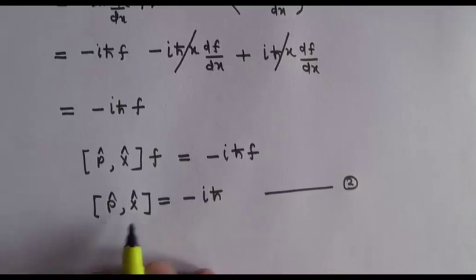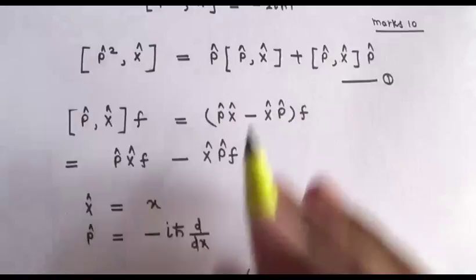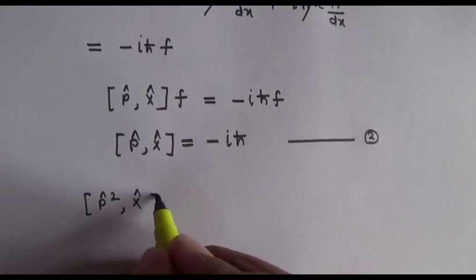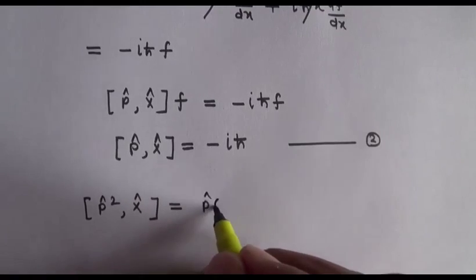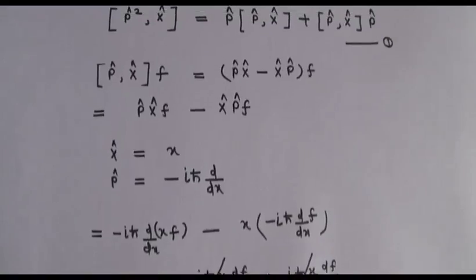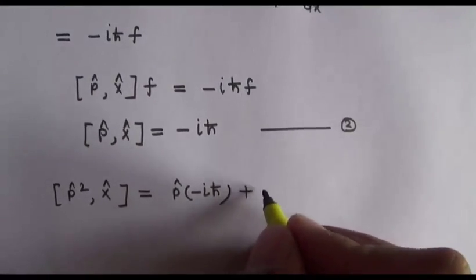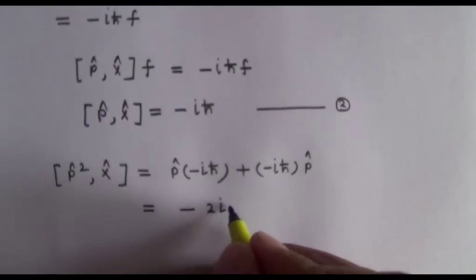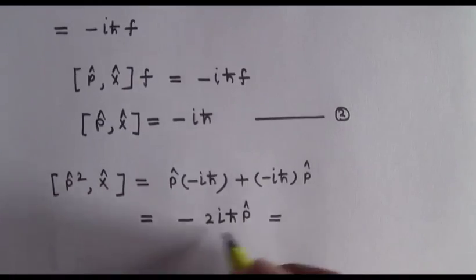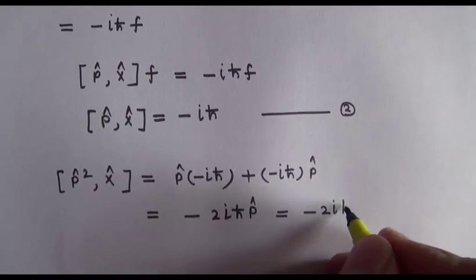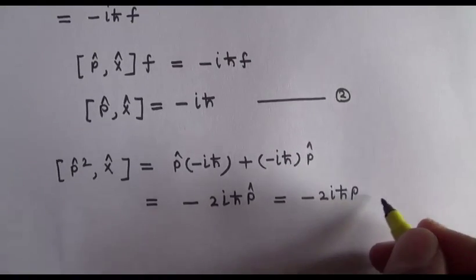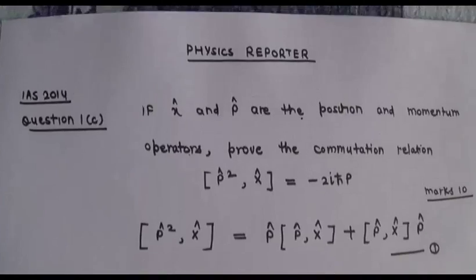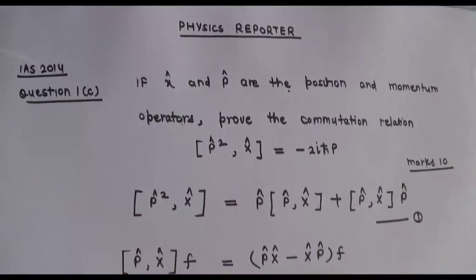Now substituting the value of [p̂, x̂] = -iℏ back into the expansion, we get [p̂², x̂] = p̂(-iℏ) + (-iℏ)p̂ = -2iℏp̂. Writing it in terms of the operator's value, that is the relation we had to prove. This was a 10-marks question asked in the IES 2014 exam.